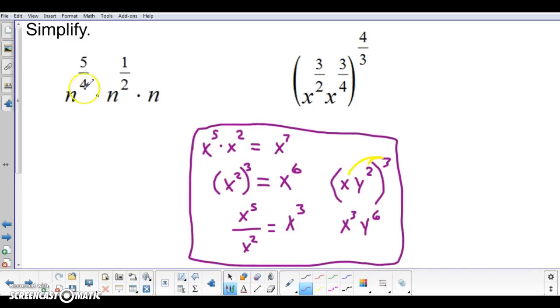And we're going to look at n to the five-fourths times n to the one-half times n. Well, if you'll notice, this one is n to the first, so let's add a little exponent just to make sure. Same base, we're going to go ahead and add their powers together.